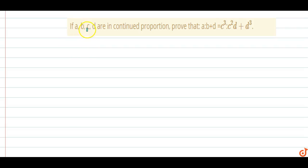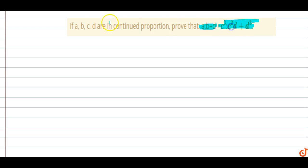In this question, if A, B, C, D are in continued proportion, prove that A by B plus D equals C cubed by C squared D plus D cubed.